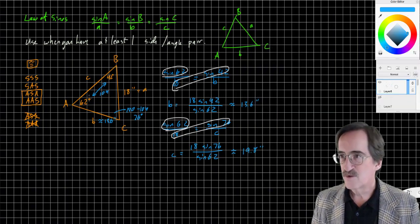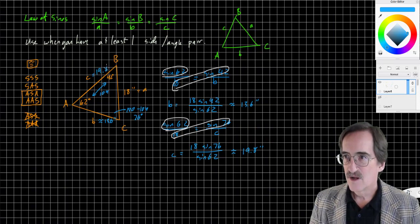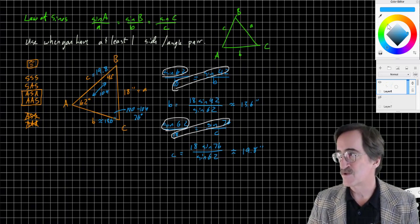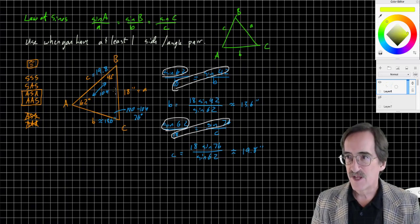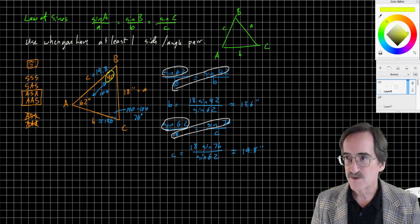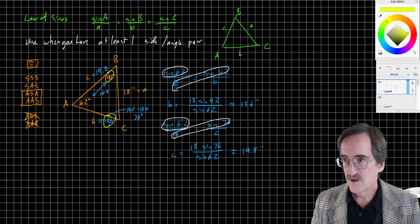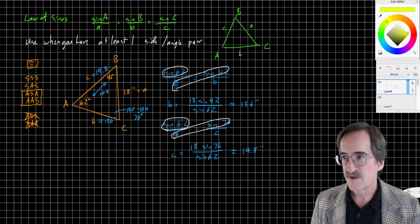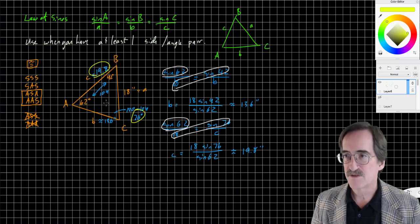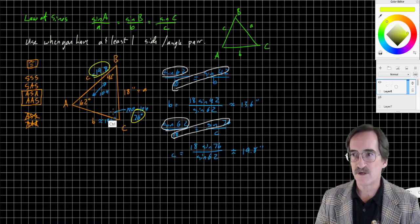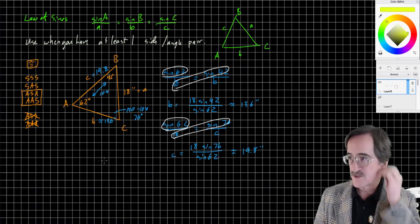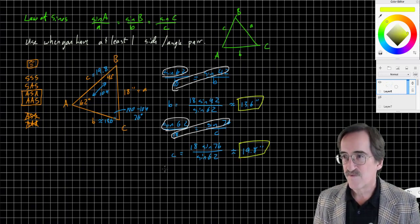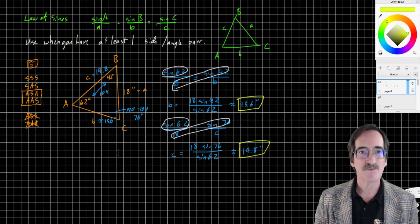Now a good way to check is relative size. The smallest angle should be opposite the smallest side. Smallest angle is 42, the smallest side is 13.6, and it is. The biggest angle is 76, and the biggest side is 19.8. So biggest should match with biggest, smallest should match with smallest. It's a good way to make sure that you've got the answers right. We have solved the triangle.